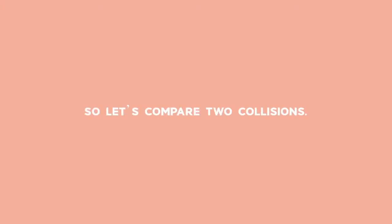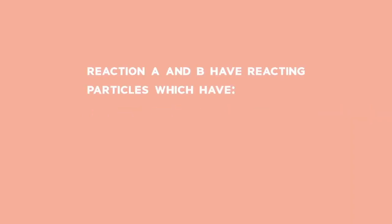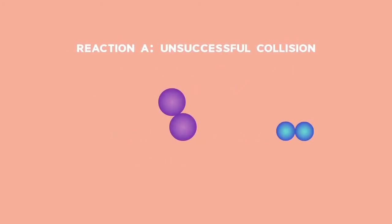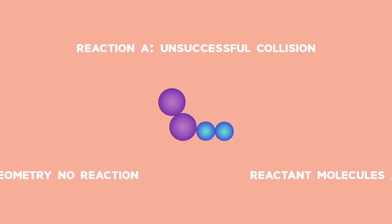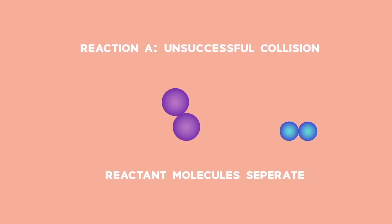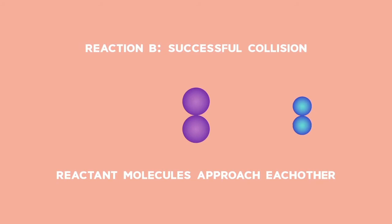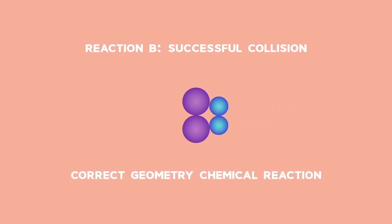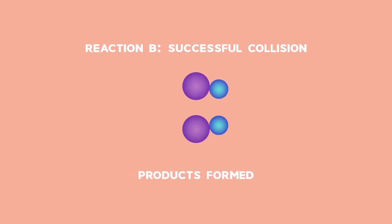So let's compare two collisions. Reaction A and B have reacting particles which have a collision taking place with enough energy. But, in the example here, the reacting molecules in reaction A approaching one another collide with incorrect collision geometry. They aren't facing the right way and as a result, no reaction is taking place. Contrasting this with reaction B where the collision geometry is correct and the result is a reaction between the species.